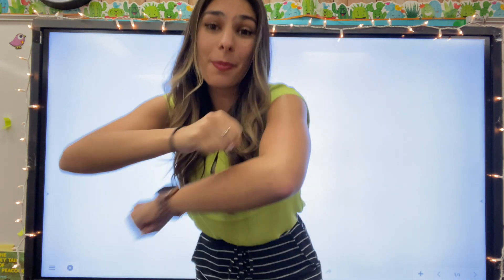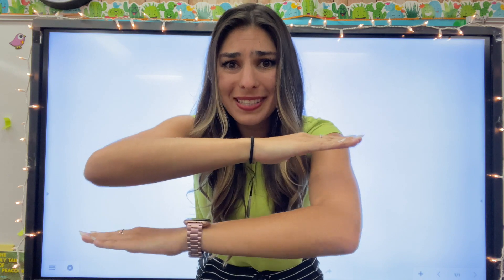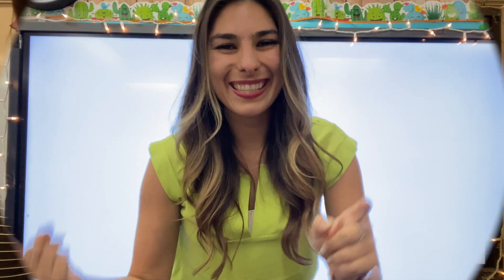So in order to do this, we just follow three simple steps. We're going to round each number. Second, we're going to add each number, and three, we're going to find the sum. So I'm going to show you some examples on the board. Let's get started.